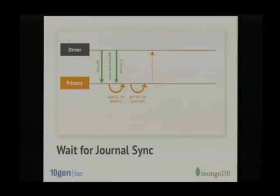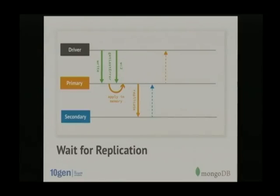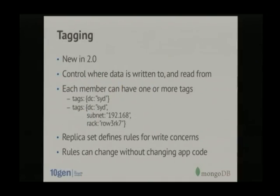You can set a higher write concern to wait for journal sync, getting acknowledgement once data has been applied to memory and to the journal. You can also set a flag specifying that the write must be replicated to a certain number of hosts — for example a write concern of two means it must be committed to at least two other nodes aside from the primary. MongoDB 2.0 added a tagging feature giving you even more control, where you can add tags to hosts such as data center location or rack number.